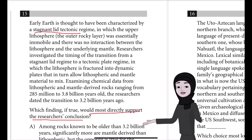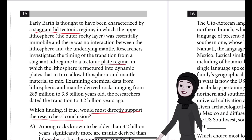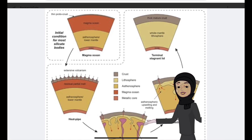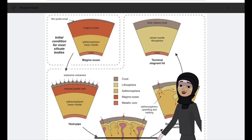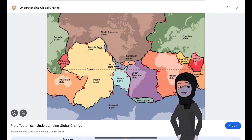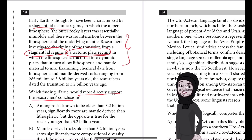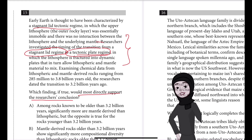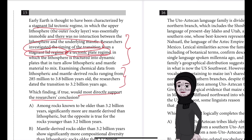They are talking about two regimes: the stagnant lid tectonic regime and the tectonic plate regime. In the stagnant lid regime, you have the magma at the bottom and the thin photo crust on top — it was initially like this. After that, we go to the tectonic plate regime, where we can see the various plates. This happened later. The researchers are saying there has been a transition from the stagnant lid regime to the tectonic plate regime, and they investigated the timing of that transition.